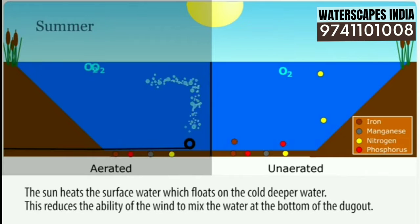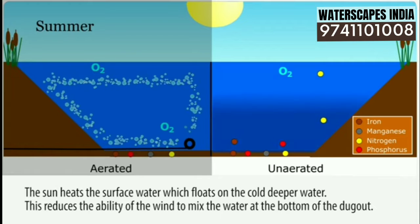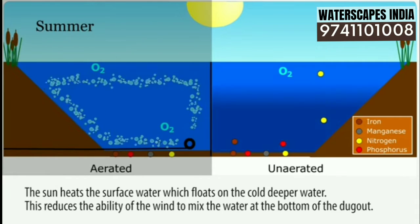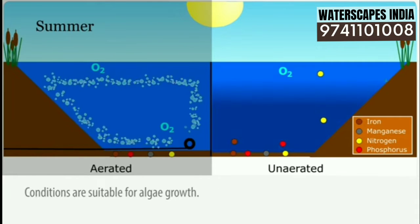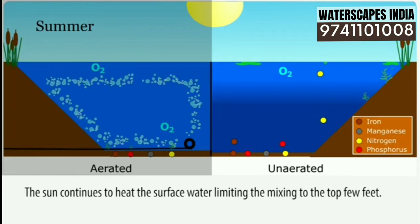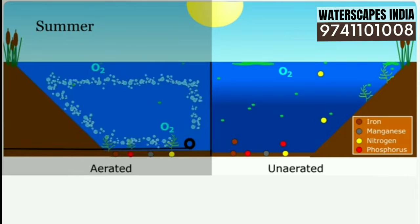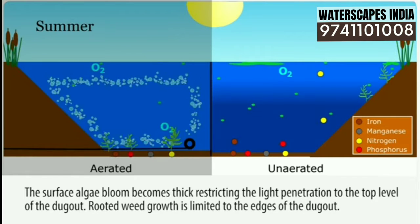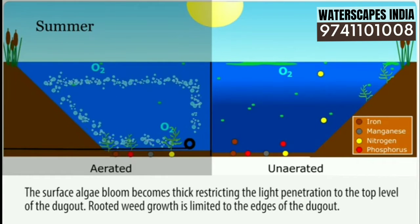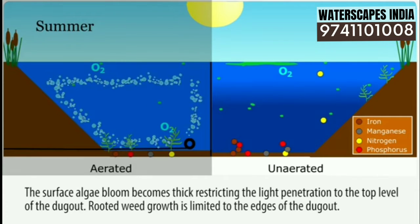Unaerated, the sun heats the surface water which floats on the cold deep water, reducing the ability of the wind to mix the water at the bottom of the dugout. Conditions are suitable for algae growth. The sun continues to heat the surface water, limiting mixing to the top few feet. The surface algae bloom becomes thick, restricting light penetration to the top level of the dugout. Rooted weed growth is limited to the edges of the dugout.